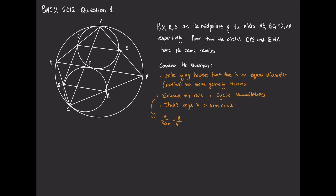We'll write down the extended sine rule: a/sin(A) = b/sin(B) = c/sin(C) = 2r, where a, b, c are the sides, A, B, C are the opposite angles, and r is the radius of the circumcircle — essentially the circle passing through all three points of the triangle. Since the question asks us to prove both circles have the same radius, we'll draw two triangles in the circles and utilize the extended sine rule, which is the only one of those theorems that directly involves the radius.